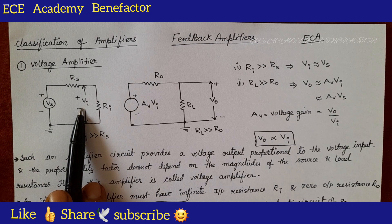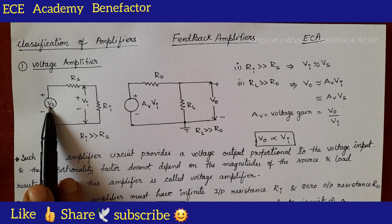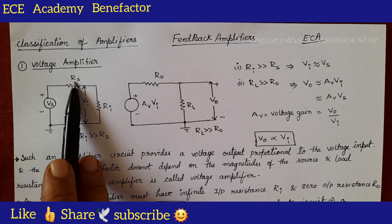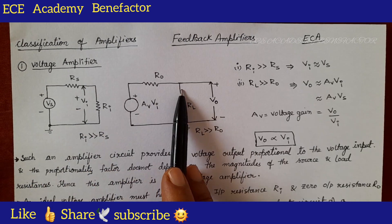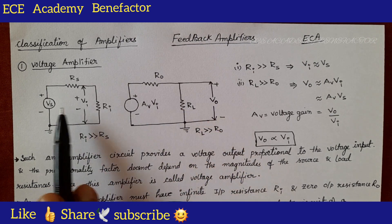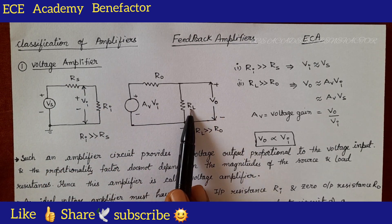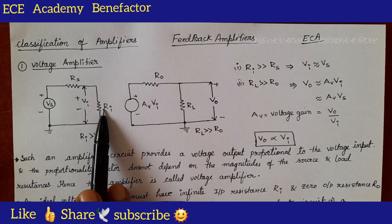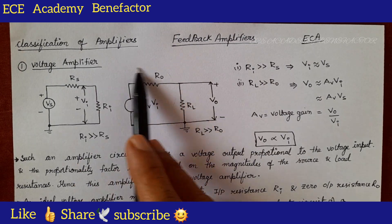How to draw a voltage amplifier? First we need to connect a voltage source V_s. The voltage source will have a series resistance, so source resistance is R_s. On the output side we are connecting a load resistor R_l, where we are observing the output voltage. At the input side: voltage source with source resistance R_s, and output voltage across R_l.